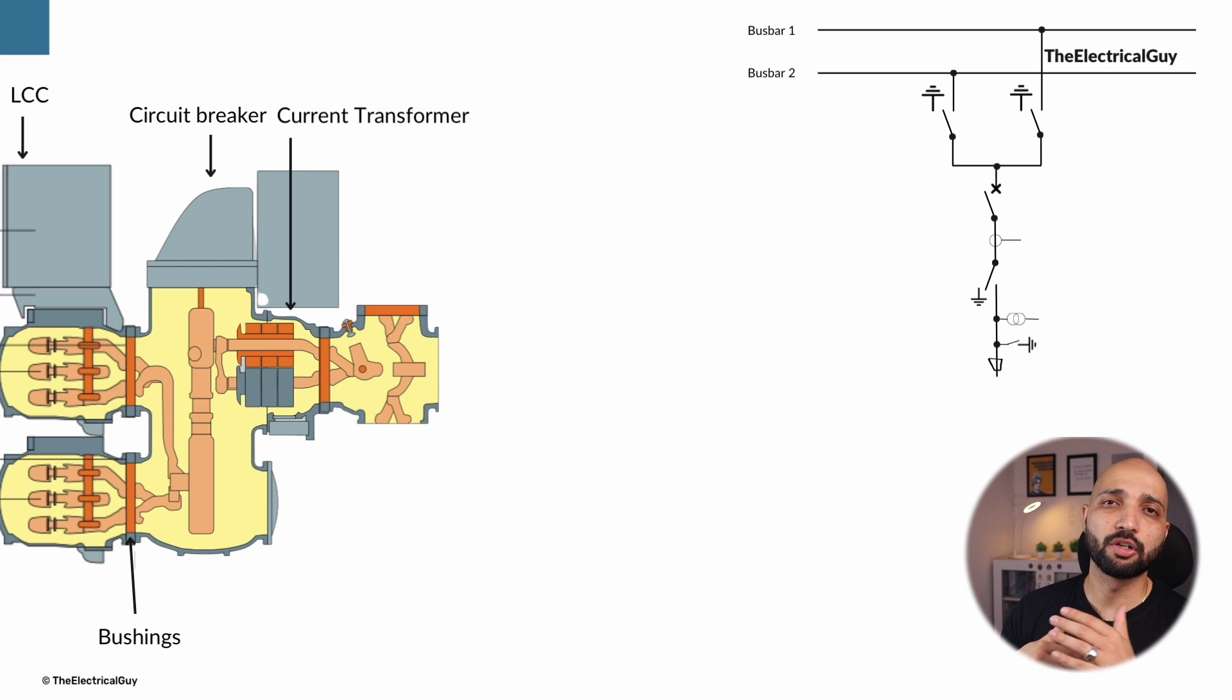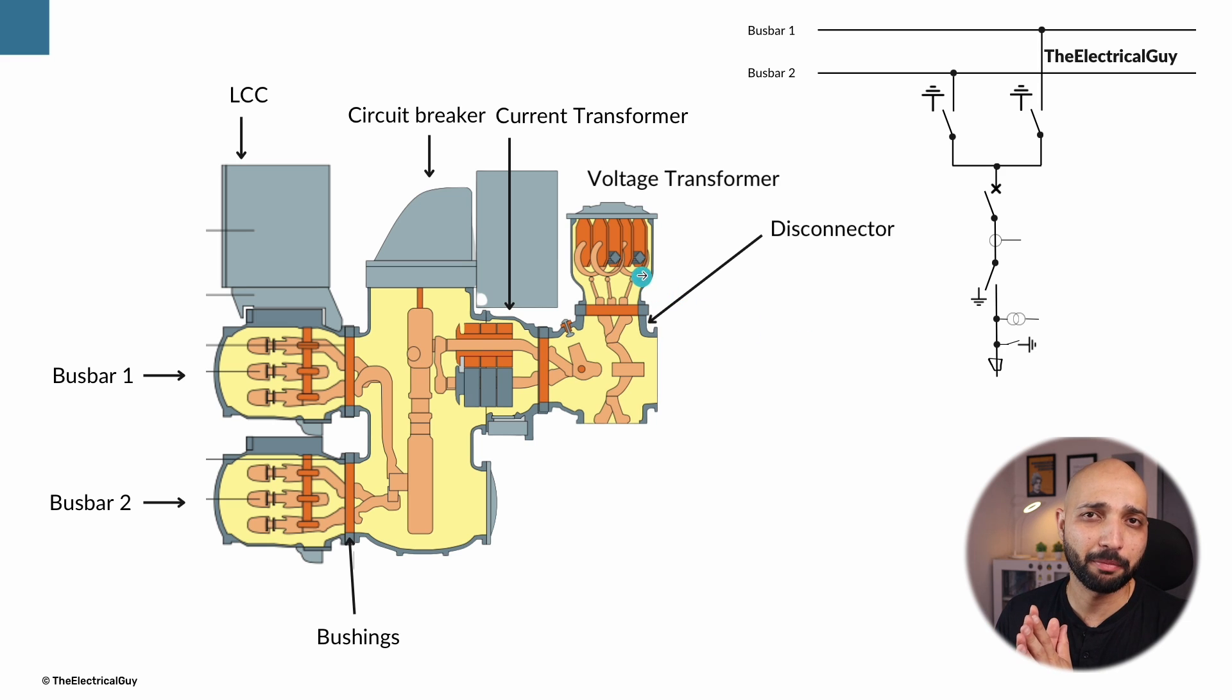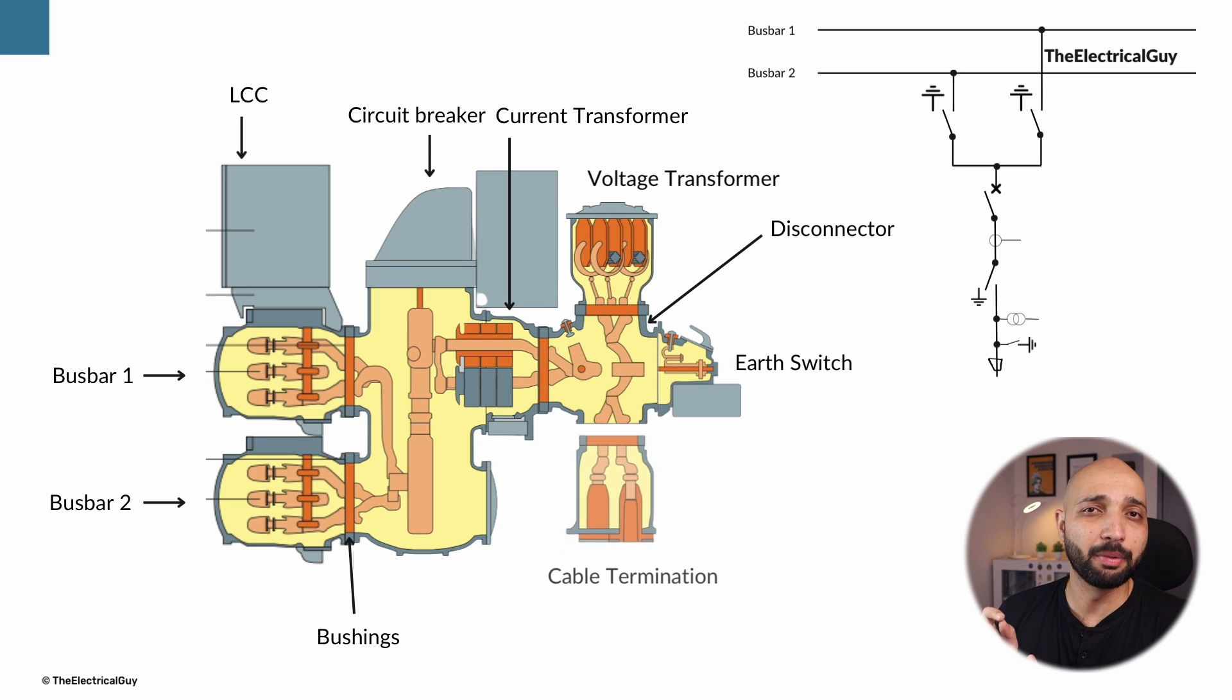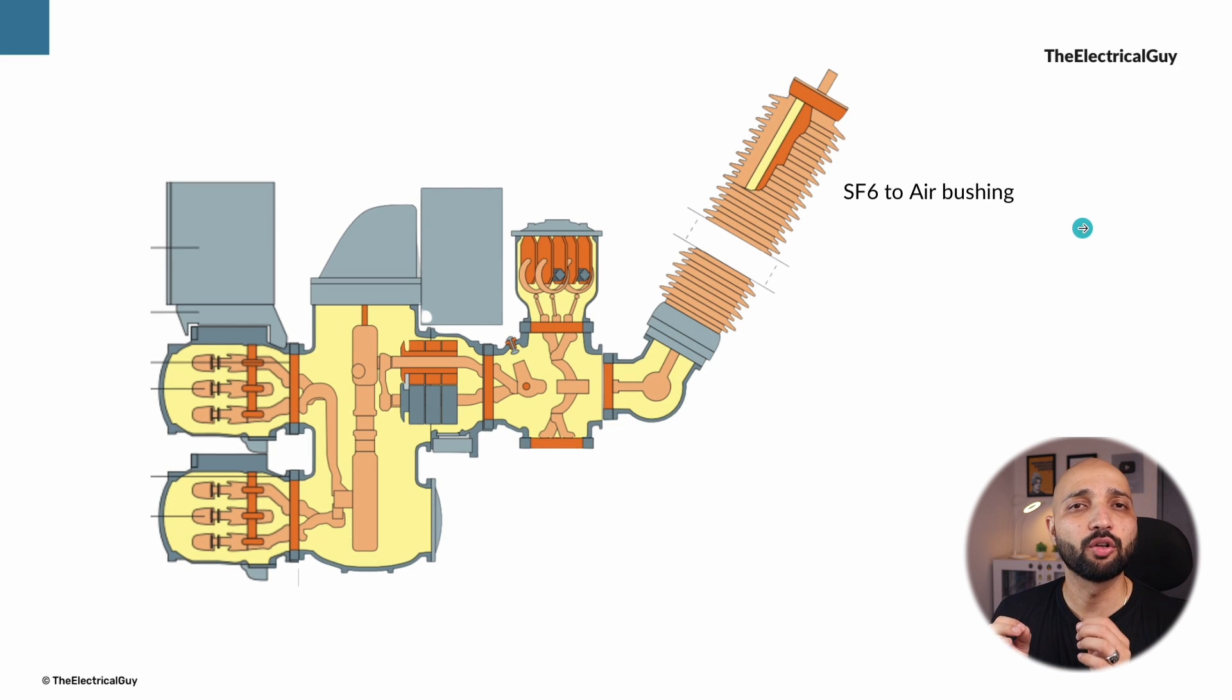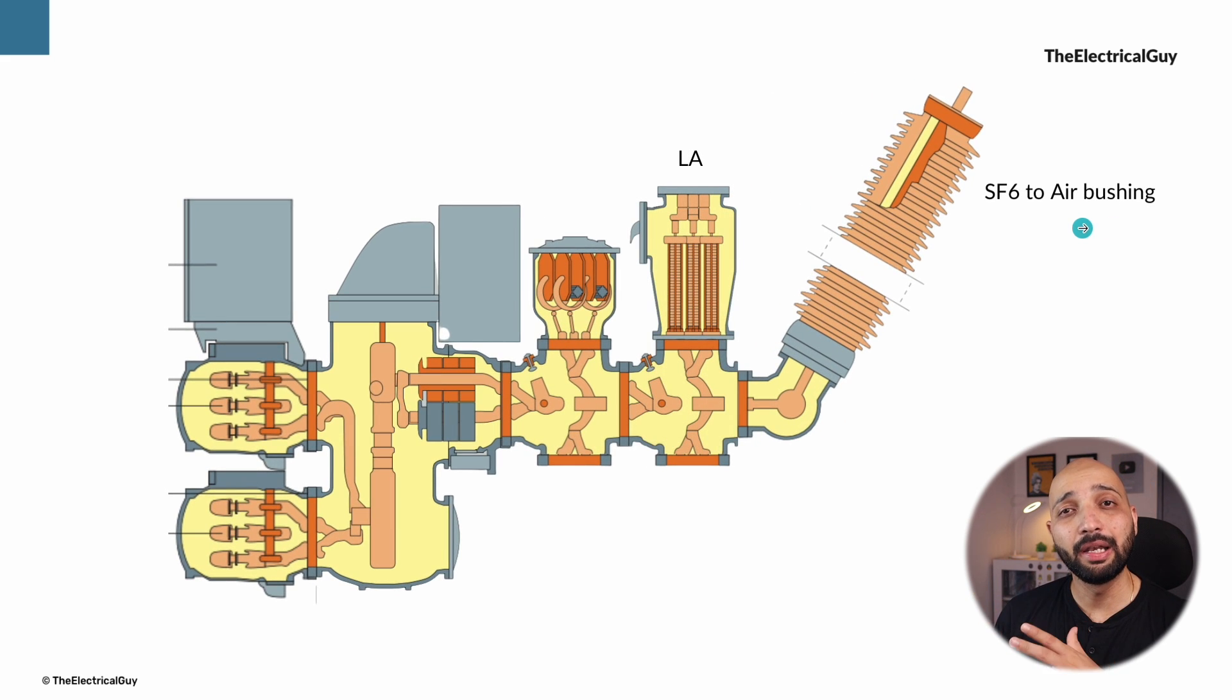After that we saw a voltage transformer is provided, which is this compartment. Voltage transformer is connected in parallel in the system. Then there is a dedicated earth switch which can help grounding the trapped charges. And then at last we saw a cable termination which is this compartment. From here the cable can be connected to a transformer. If cable termination is not required, then SF6 to air termination can also be provided via a SF6 to air bushing. Lightning arrestor or LA can also be a component of GIS.